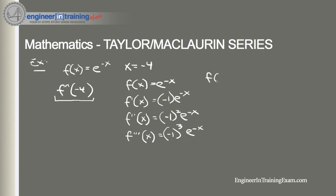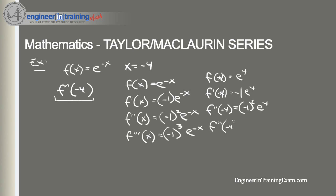Evaluating at x equals negative four: f(-4) equals e^4, f'(-4) equals -1 times e^4, f''(-4) equals (-1)^2 times e^4, and so on. Looking at this pattern, we can derive our general formula: f^n(-4) is equal to (-1)^n times e^4.